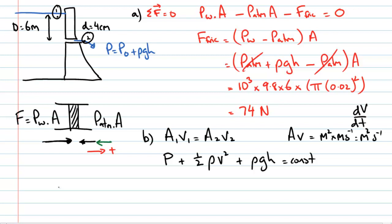At point one, the pressure is atmospheric. The kinetic energy density is ½ρv₁². We assume the hole is small relative to the dam's total volume, so the water level doesn't drop appreciably — meaning the velocity at the top surface is essentially zero, and that term drops out. The potential energy density is ρgh.